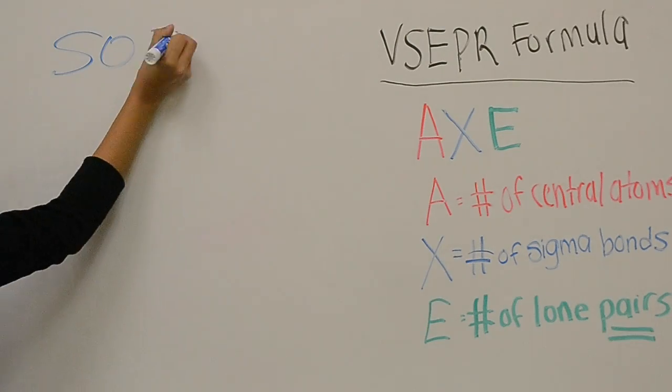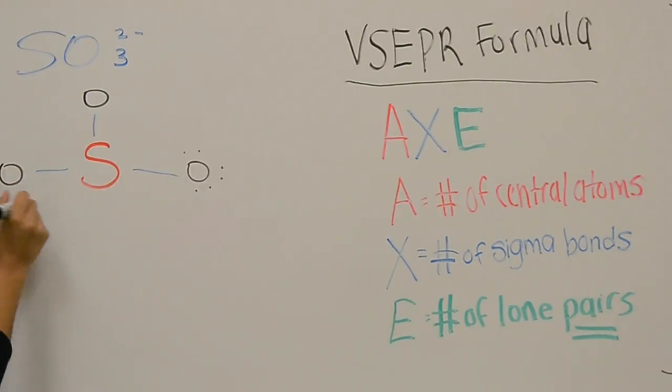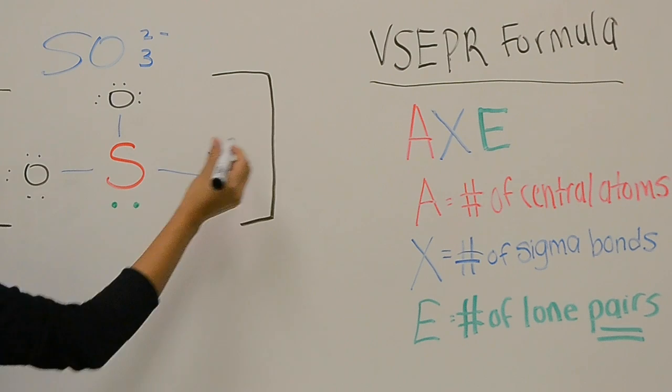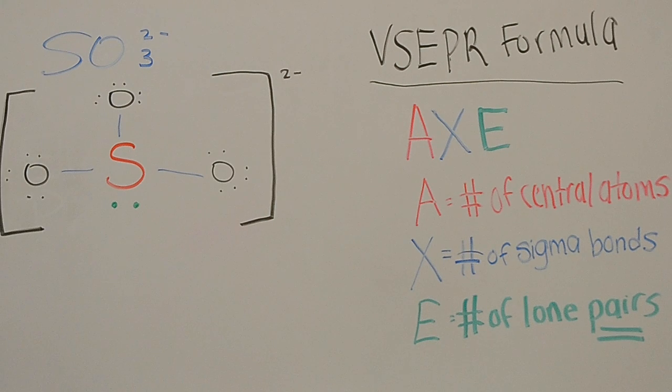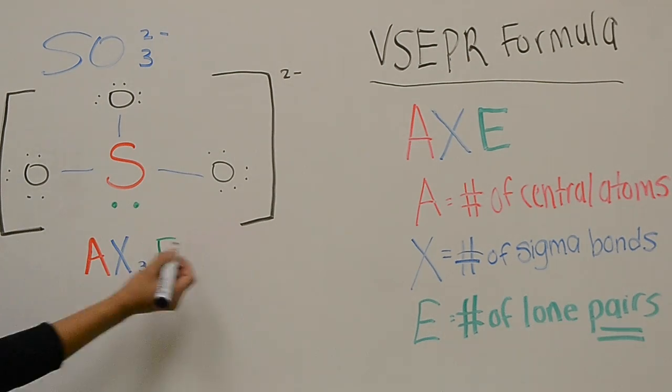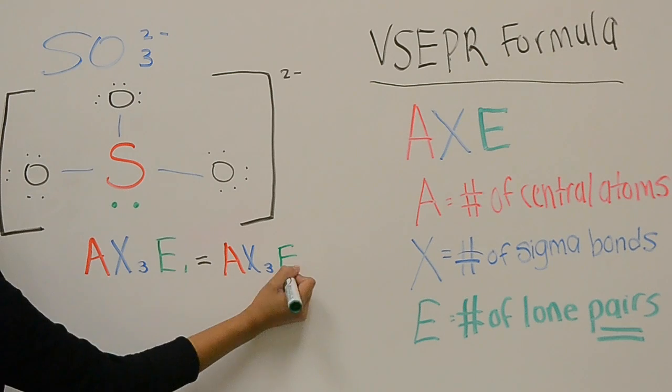Now let's begin an example with sulfite. Let's find the VSEPR formula for this molecule. As shown in the Lewis structure, we can see that there are three sigma bonds and a pair of unshared electrons. Notice how we write the number of pairs and not the individual number of electrons. The VSEPR formula for sulfite is AX3E1.